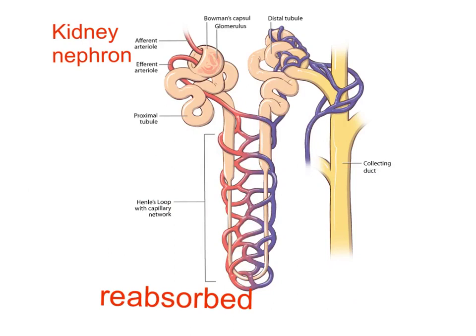Only the waste — the urea and excess water and excess salts — should go down to form the urine in the bladder. The useful substances will be sent off back to the heart. So once the blood's been filtered, the filtrate goes around here, but the useful substances have to be reabsorbed. The useful materials are reabsorbed back into the body. Everything is filtered out of the blood except the really large molecules like proteins and platelets, which stay in the blood. Then the useful stuff is reabsorbed, and only wastes are left to form the urine.